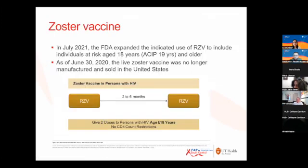The recombinant zoster vaccine — the live zoster vaccine is no longer available in the U.S. What we have is mainly Shingrix, which is a recombinant zoster vaccine. It is now expanded to include individuals with HIV over the age of 18 to 19, depending on the guideline, and is a two-dose series given two to six months apart. All patients with HIV over the age of 18 or 19 are recommended to receive this vaccine.